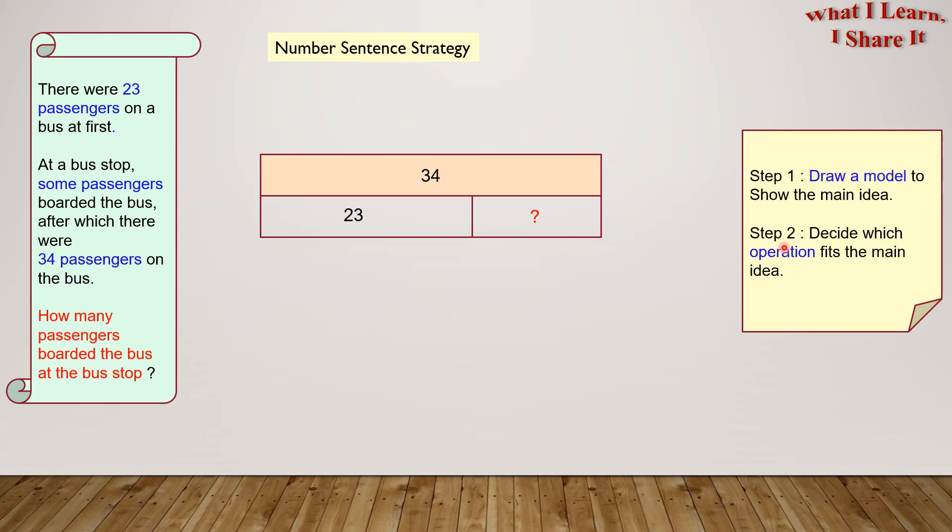Step 2. Decide which operation fits the main idea. As you can see here, 34 is the whole and 23 is a part of it. And, we have to find the remaining part.